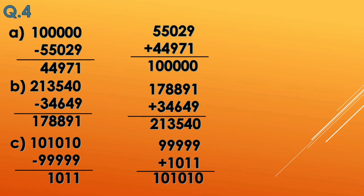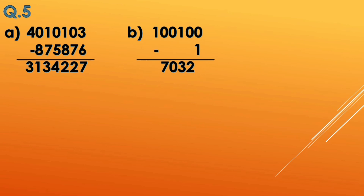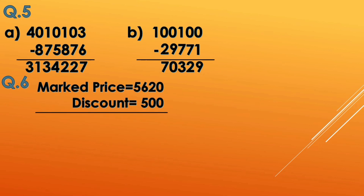In question 5 we need to guess the missing digits. For option a: 3 cannot be subtracted from 6, so it takes 1 carry — 13 minus 6 is 7. Then 9 minus 7 is 2, then 10 minus 8 is 2, and 9 minus 5 is 4. Then 10 minus what gives 3 — the answer is 7. And 9 minus what gives 1 — that is 8. For option b: 0 cannot be subtracted from 1, so 10 minus 1 is 9. After carry, 9 minus what gives 2 — that is 7. Then 10 minus what gives 3 — 10 minus 7 is 3. Then 9 minus 9 is 0, and 9 minus 2 is 7.